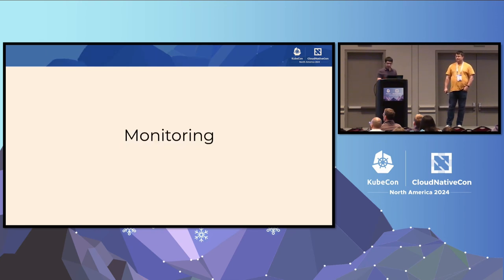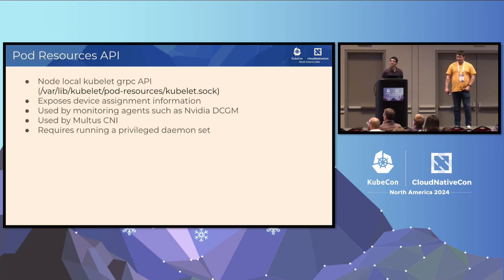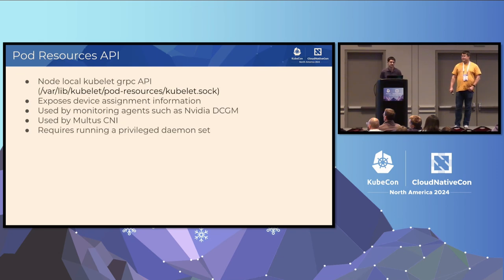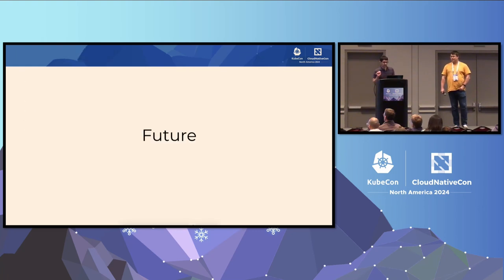For monitoring today, kubelet has the Pod Resources API — a node-local kubelet gRPC API. A privileged daemon set running on each node can connect to kubelet and gather device assignment information and device status through this API. It's used by monitoring agents such as NVIDIA's DCGM and also by Multus. However, the downside is that this is a back-end way to surface device information and requires a privileged daemon set. Ideally, this information should be surfaced up to the pod directly.